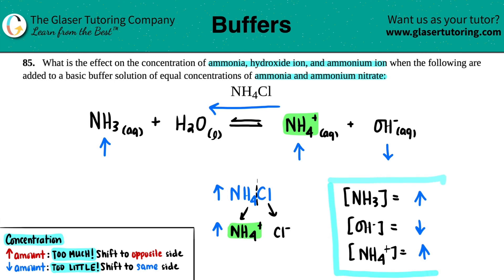So these are your final answers for the effect on the concentration: ammonium increases, ammonia increases, and OH- decreases. Hopefully this helped — I think this is the end for 85. Le Chatelier's principle keeps coming back, but it's an important concept in chemistry. I hope this helped. Let me know in the comments. Good luck on your future tests and quizzes, and I'll see you in upcoming lessons.